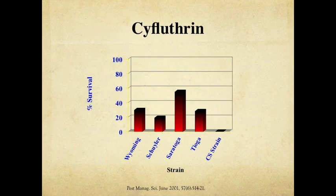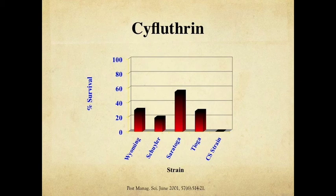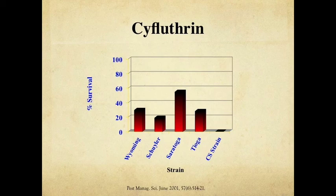The last material mentioned in this study was cyfluthrin, which at the time had only been on the market for about two years. It was commonly used for residual barn sprays, and we can see that in those four counties we did not have 100% survival, but still after only two years a number of flies were resistant. The CS strain had no survivors. Interestingly, one of the farms studied was an organic farm where insecticides had not been used for many years, showing that flies demonstrating resistance were actually flying in from other places where insecticides were still being used.